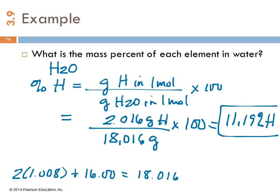That doesn't look like a percent sign. Let's see if I can do it better. 11.19 percent of water by mass is hydrogen.